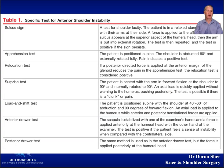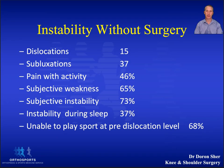There are specific tests for shoulder instability. The sulcus sign is one, and the apprehension and relocation tests are probably the most useful. A careful examination under anesthetic will confirm the direction of instability, and this needs to be done every time before starting the actual operation.